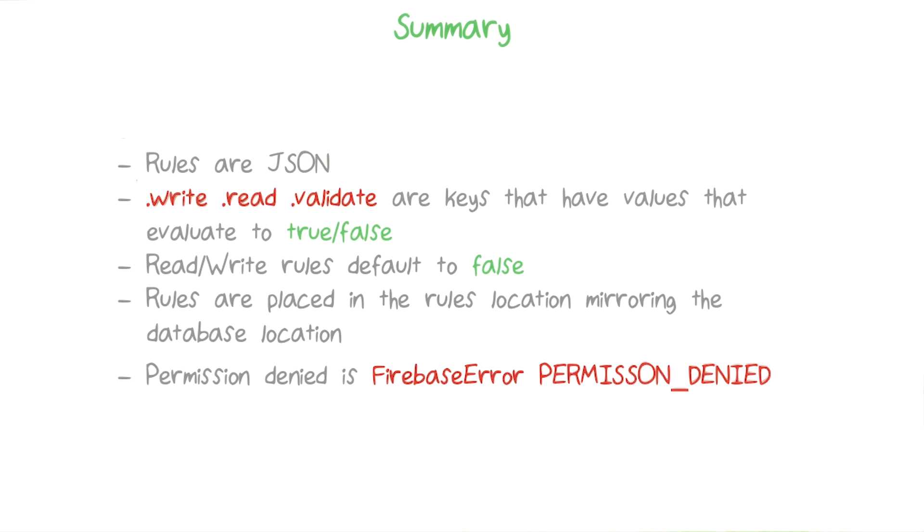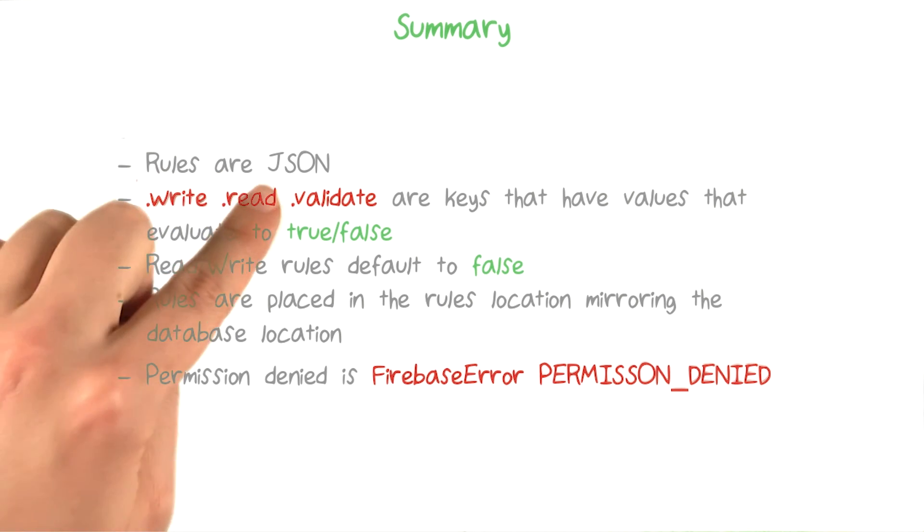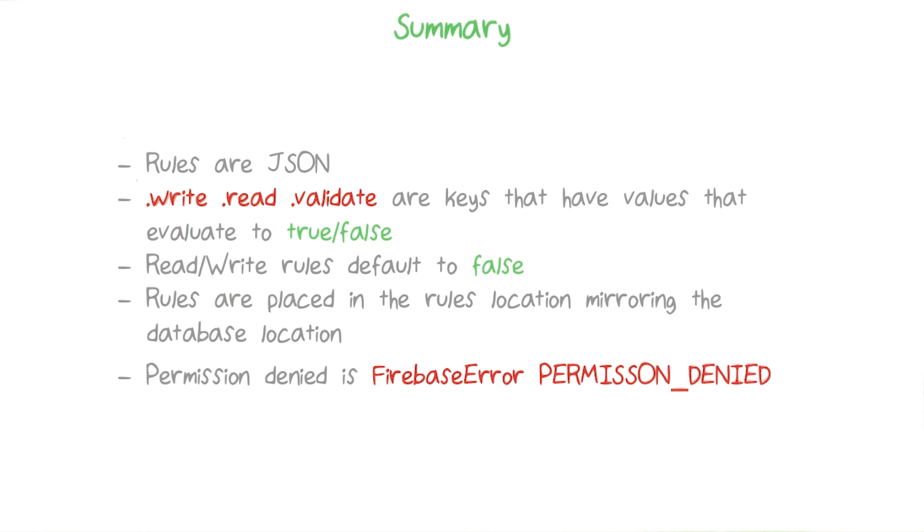All right, I've just thrown a lot of information at you. So let me take a moment to summarize. Your rules file is found in the Firebase dashboard in the Security and Rules tab, and the rules themselves are written in JSON. The actual permissions will have keys that are write, read, or validate.